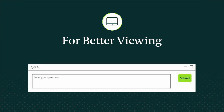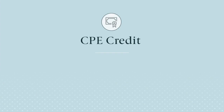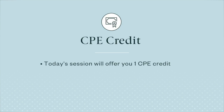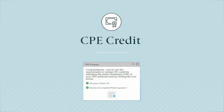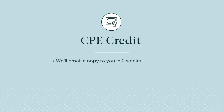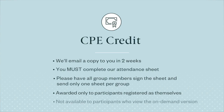We'll do our best to answer all questions during the presentation or follow up via email. If you experience technical difficulty, refresh your browser by hitting the F5 key. Today's session will offer you one CPE credit. To receive credit, you must meet the requirements as specified by the National Association of State Boards of Accountancy. You must attend at least 50 minutes of the session and respond to at least 75% of the polling questions. We'll track your progress and alert you when you've earned CPE credit. If you're attending in a group, you must complete our attendance sheet to receive CPE credit. CPE credit can be awarded only to participants registered as themselves and isn't available to participants who view the on-demand version.